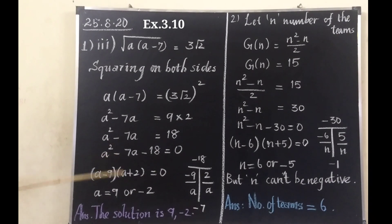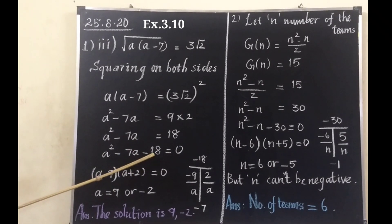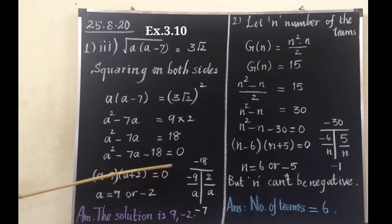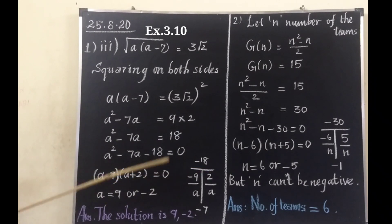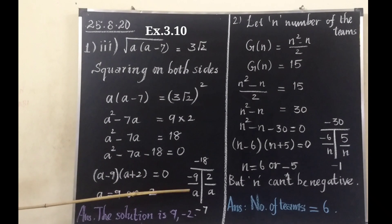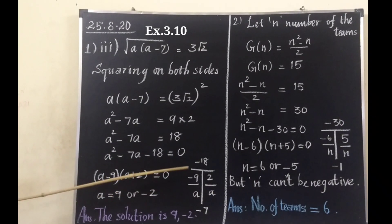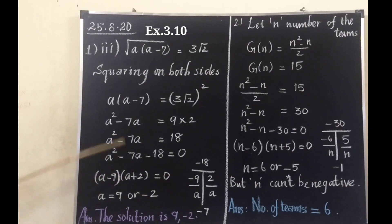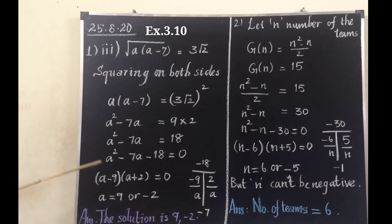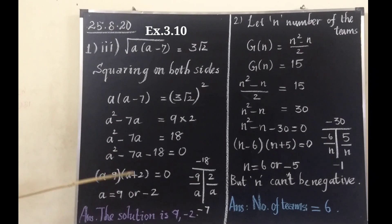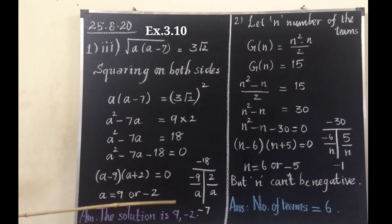Now we have to factorize it into two linear factors. If you multiply the two numbers, the product is minus 18. The sum is minus 7. The numbers are minus 9 and 2. Dividing, we get (a minus 9)(a plus 2) equals 0 as the two linear factors of the given quadratic equation. By equating them to zero, we get a equals 9 or a equals minus 2. That is the solution for this sum.